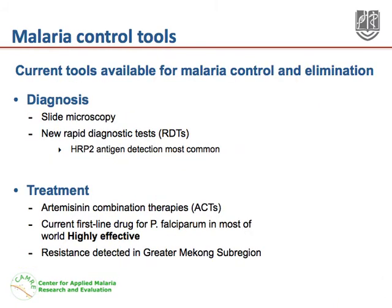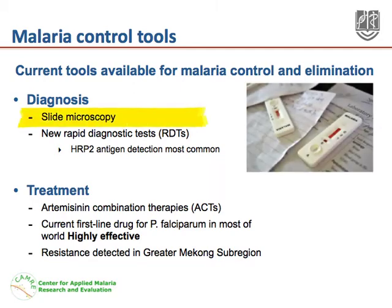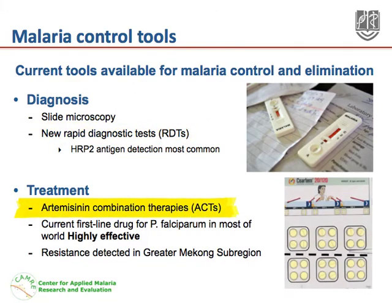We will focus on the current tools available for malaria control and elimination. Slide microscopy remains the gold standard diagnosis for parasite infection. New rapid diagnostic tests, or RDTs, are now available for point-of-care diagnostics; the most common type is the HRP2 antigen detection RDT. Artemisinin-based combination therapies, or ACTs, are the current first-line drug for treating Plasmodium falciparum. They are highly effective; however, it should be noted that drug resistance to Artemisinin has now been detected in the greater Mekong region.